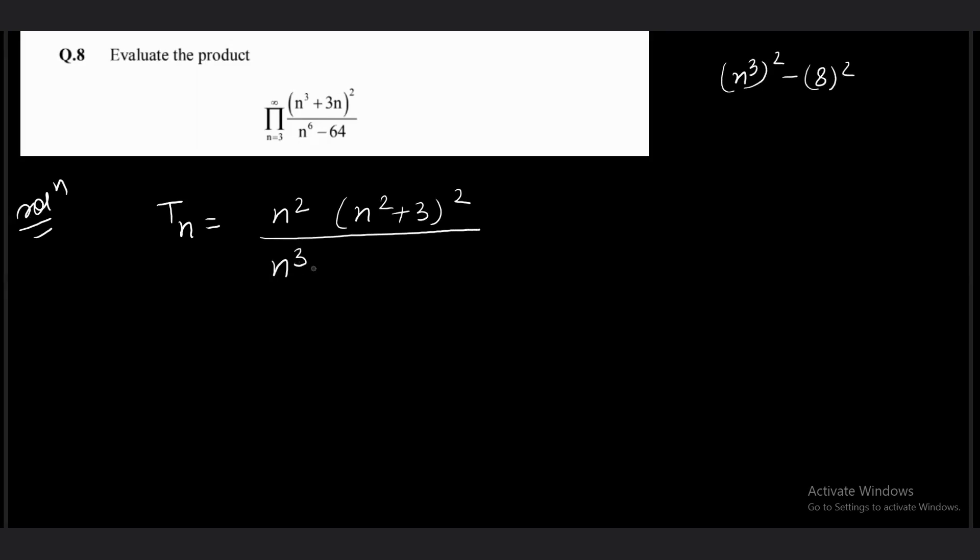The denominator can be written as (n³ + 8)(n³ - 8). We try to create similar kinds of factors in the numerator and denominator. Similar factors will help terms cancel. But right now I cannot see any similar factor in the numerator as well as in the denominator. Doesn't matter, you proceed.